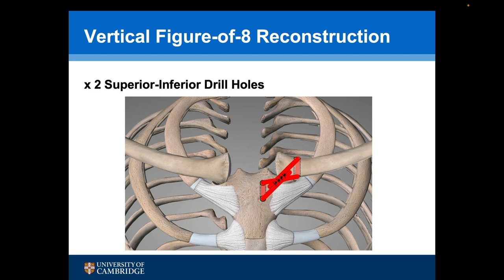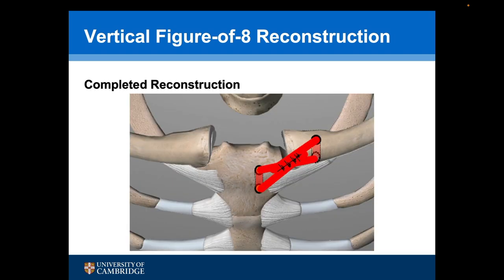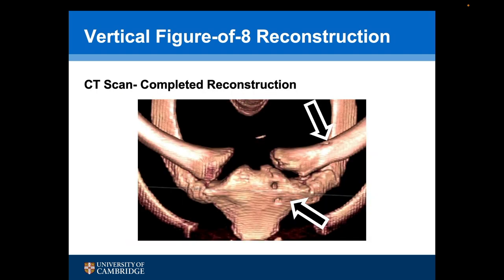This is the final configuration following a vertical figure-of-eight hamstring tendon reconstruction for anterior instability of the sternoclavicular joint. This post-operative CT scan shows that the joint has been reduced, and we can see the superior to inferior drill hole through the clavicle and the drill holes through the sternum.